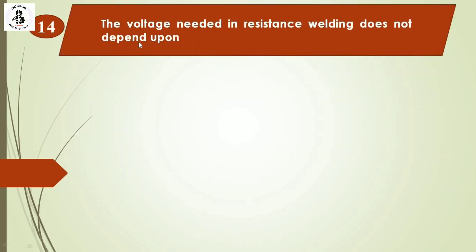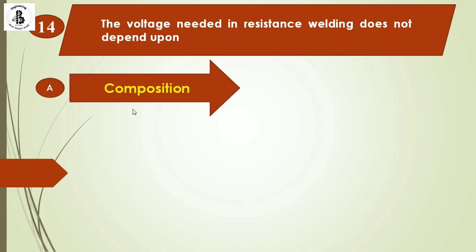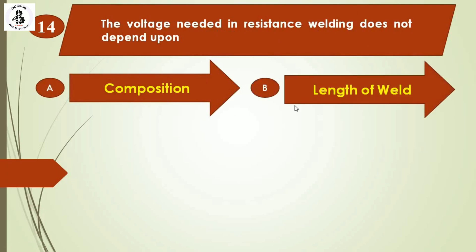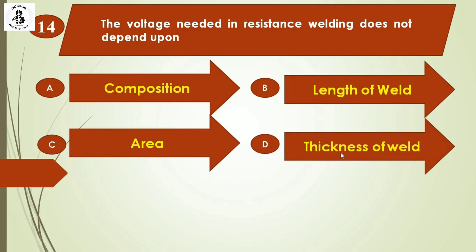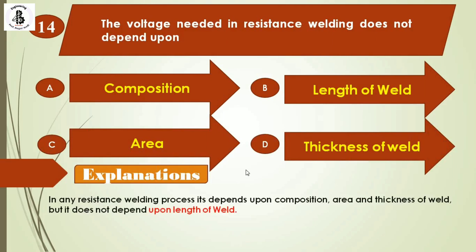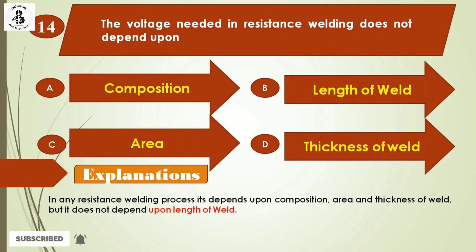Question 14: The voltage needed in resistance welding does not depend upon — option A: composition, option B: length of weld, option C: area, option D: thickness of weld. Resistance welding depends mainly on composition, area, and thickness of the weld, but not on the length. In seam welding, for example, continuous joints are made, so length is not a determining factor. The right answer is option B: length of weld.